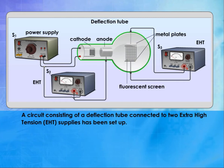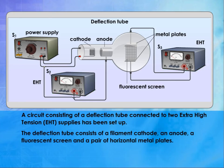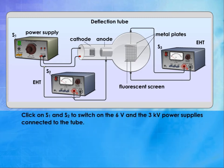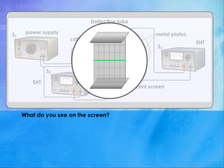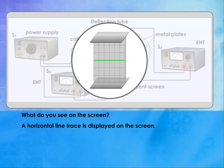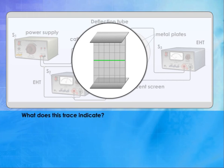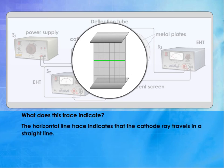A circuit consisting of a deflection tube connected to two extra high-tension EHT supplies has been set up. The deflection tube consists of a filament cathode, an anode, a fluorescent screen, and a pair of horizontal metal plates. Click on S1 and S2 to switch on the 6V and the 3KV power supplies connected to the tube. A horizontal line trace is displayed on the screen. The horizontal line trace indicates that the cathode ray travels in a straight line.